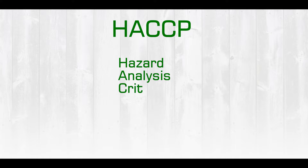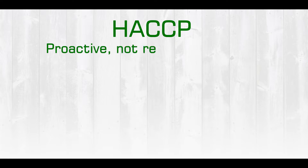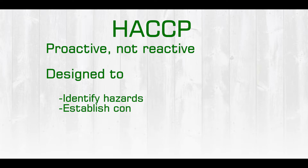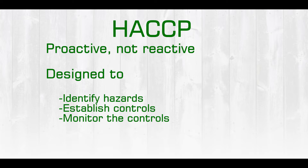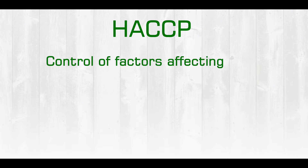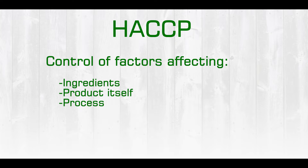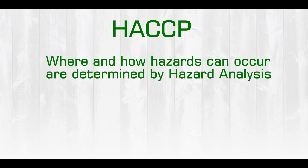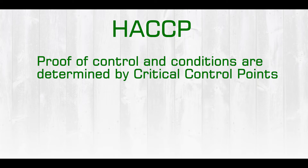HACCP stands for hazard analysis critical control points. HACCP is very much a proactive approach to food safety versus reactive. It is designed to identify hazards that could occur, establish controls for those hazards, and then monitor those control measures that we put in place. The HACCP program controls factors that affect the ingredients, the product itself, or the process. Where and how hazards can occur are determined through the hazard analysis, and proof of control of the processes and conditions are arrived at through the critical control points.